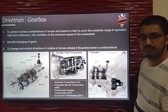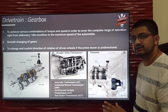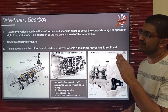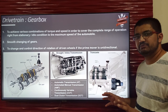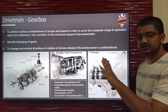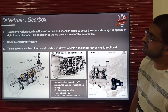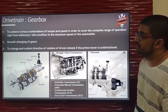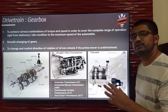The next component is the gearbox. We will refer strictly to manual gearboxes so the concept is easy to understand — any type of gearbox will have the same functions. The main function is to achieve various combinations of torque and speed. The gearbox has various different gear ratios, which we will go through in a different video explaining the theory of gearing.